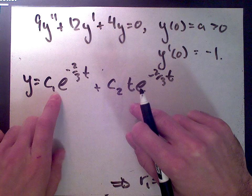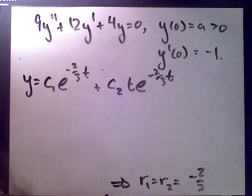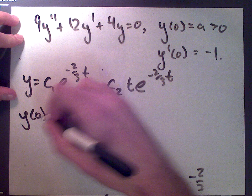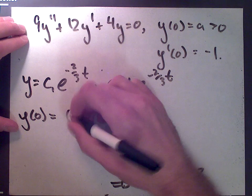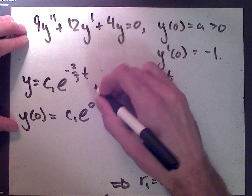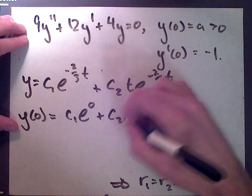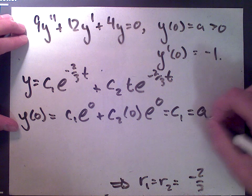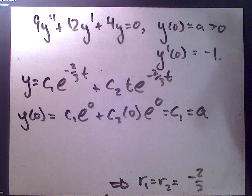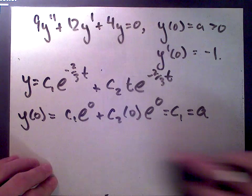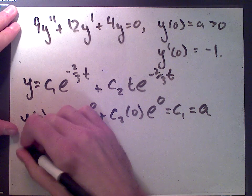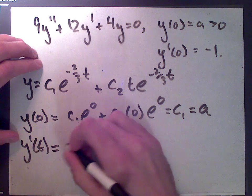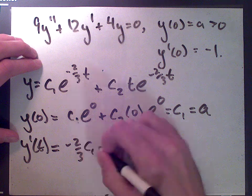Now we find the coefficients by plugging in our initial conditions. y(0) = c1·e^0 + c2·(0)·e^0 = c1. Since y(0) = a, we have c1 = a.